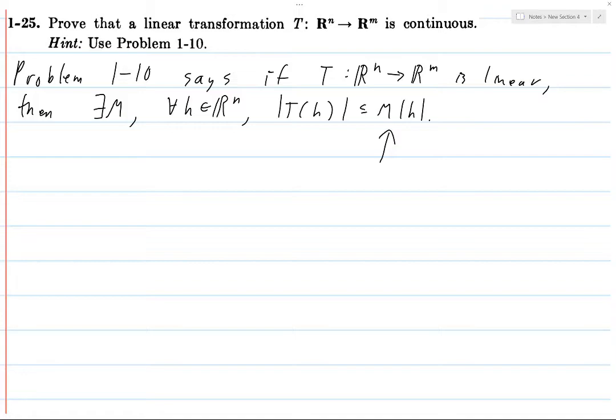So not only does linear imply continuous, which is what we're proving here, but being continuous implies linear. And of course, that's something that gets proven.